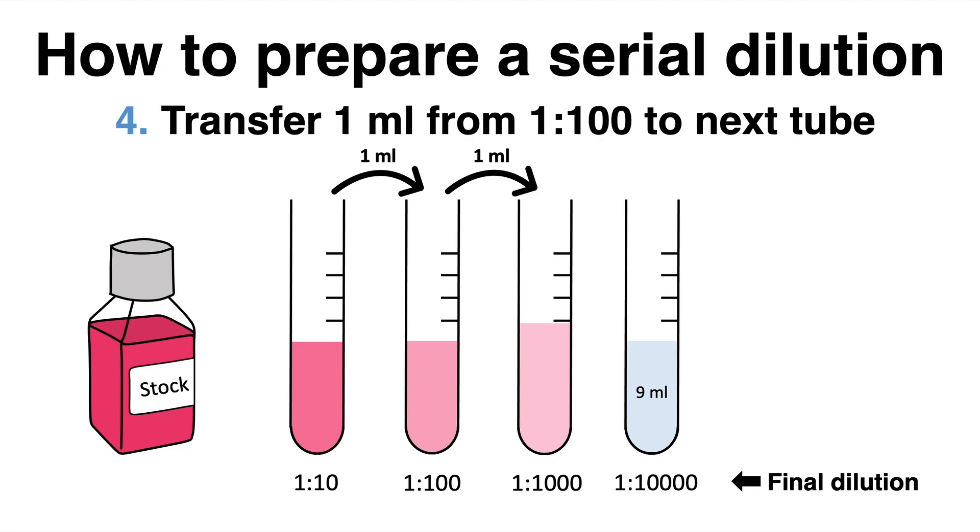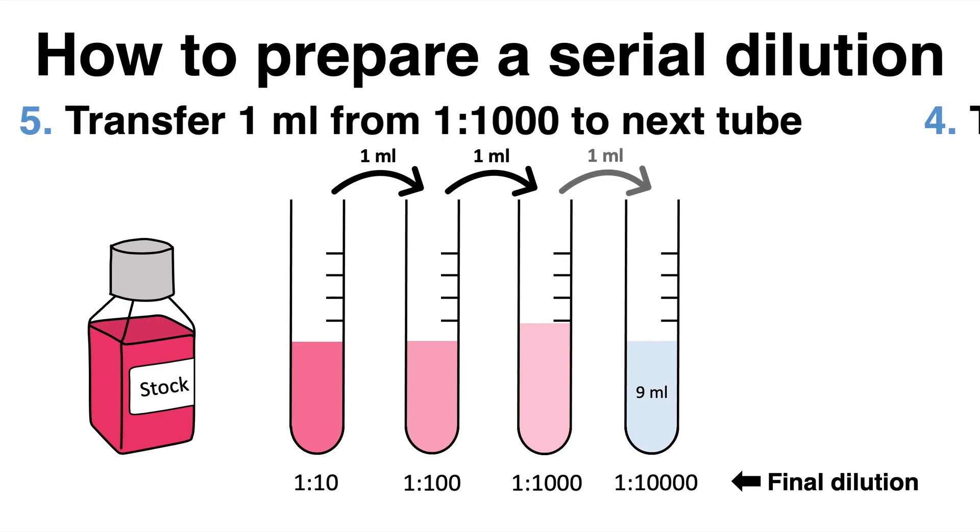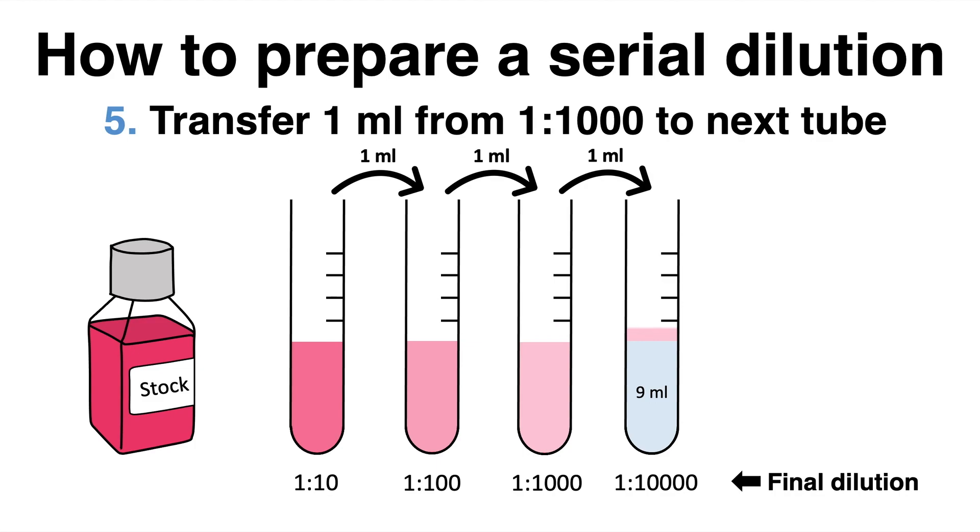So 1 among 1000 units in this tube contains the original stock solution. Again, the process is repeated by transferring 1 ml of the 1 to 1000 tube to the next one. This gives a 1 to 10000 dilution after resuspending carefully.